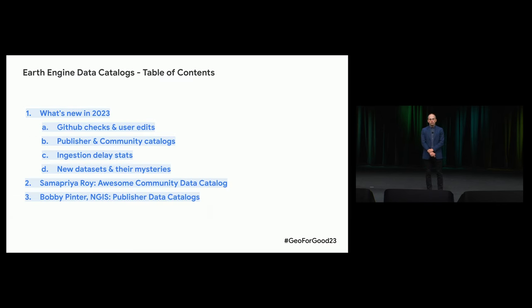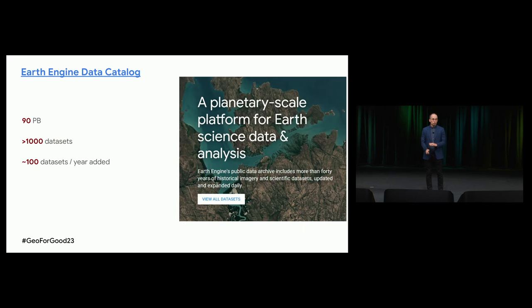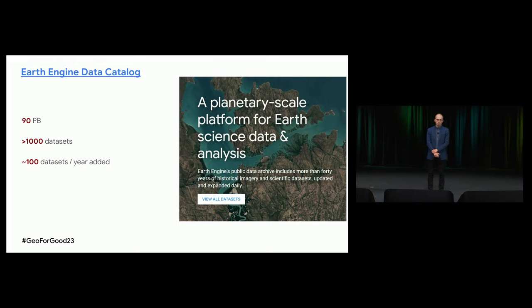We'll also talk about what happened with the data team during the last 12 months, and then I will pass the mic to Sam and Bobby to talk in detail about what they have done and what they plan to do with the catalogs. As most of you probably know, we have a huge catalog with over 1,000 datasets, roughly adding about 100 a year. We just passed 90 petabytes a few months ago. It's a lot to manage.